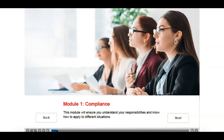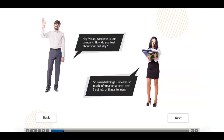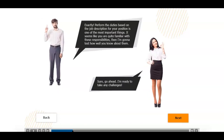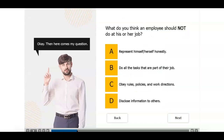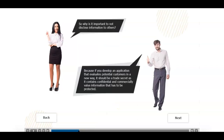The first module is Compliance. There will be two characters walking you through the first module. Here's the conversation between the two people talking about the new employee's responsibilities. Now it's time to test your basic understanding of an employee's responsibility. If you click on the wrong answer, you'll get feedback and be asked to try again. This is what you'll see when you get the right answer. Then their conversation will continue to focus on discussing the answers and further questions.